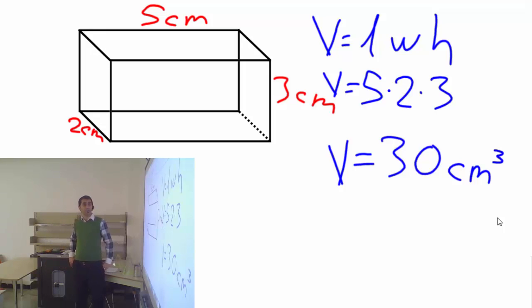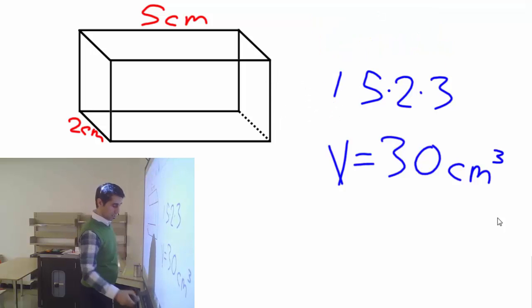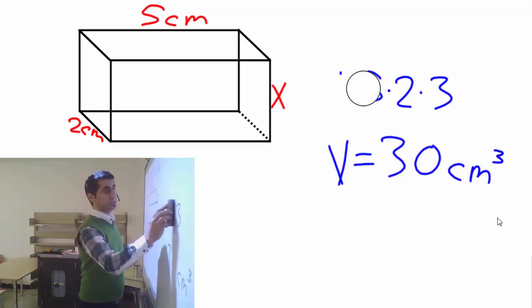Okay, so do you remember this question we did when we were calculating the volume of regular prisms? We knew all three sides and calculated the volume. Now, in this case, we are not going to know one of the sides.